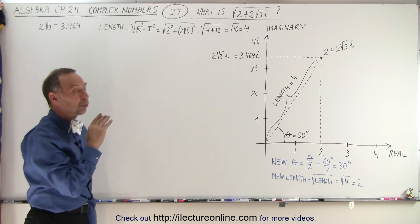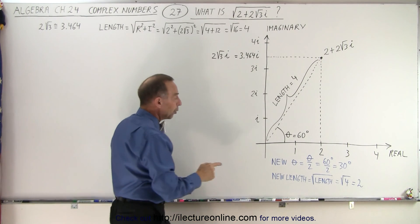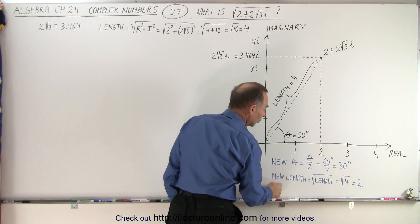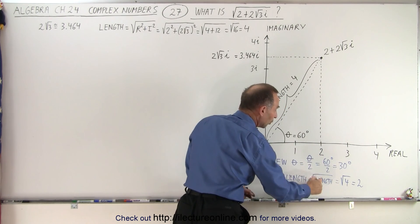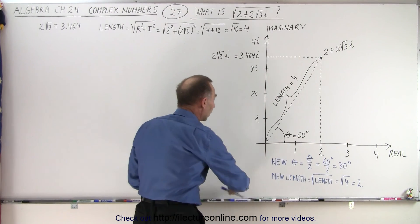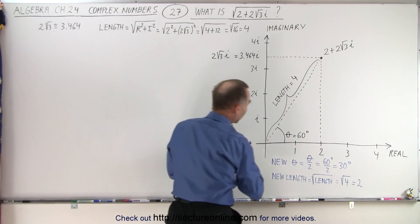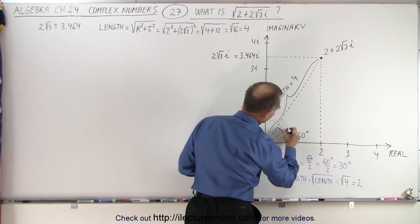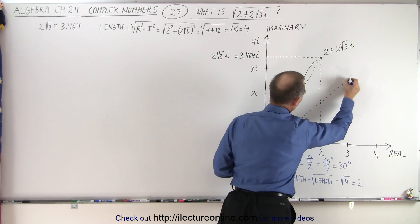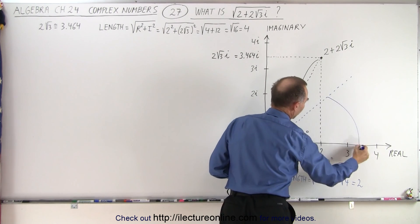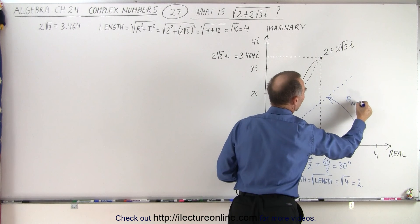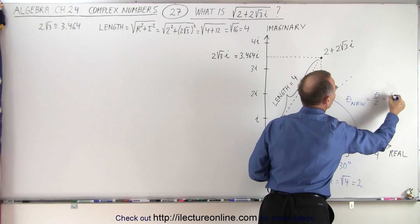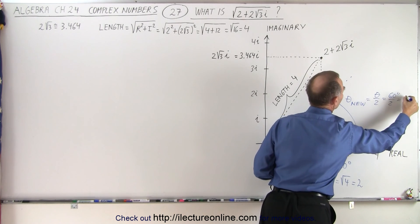Now when we take the square root, we know we're going to end up with something where the angle to the point will be half as much, and the length to that point will be the square root of the original length. So let's draw a new line at a 30-degree angle. That is approximately a 30-degree angle. So theta new is equal to theta divided by 2, which is 60 degrees divided by 2, which is equal to 30 degrees.